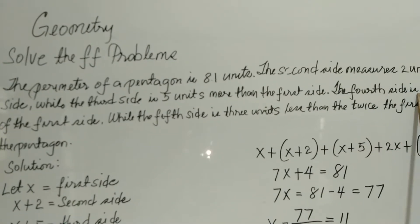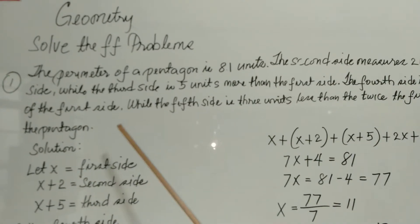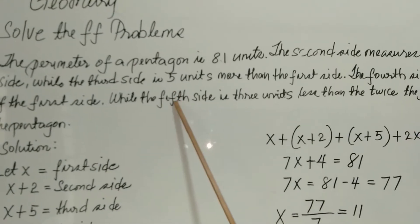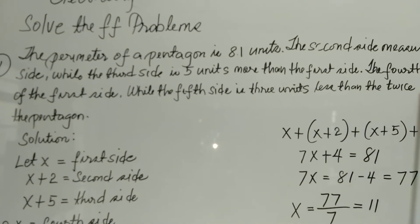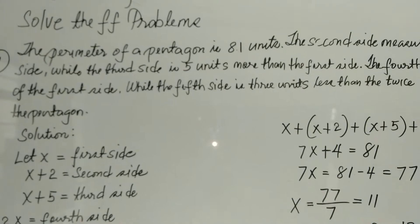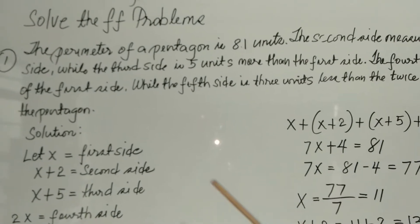The fourth side is twice the measurement of the first side, while the fifth side is 3 units less than twice the first side. Find the sides of the pentagon.